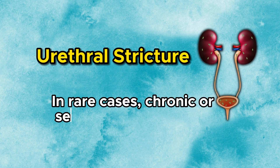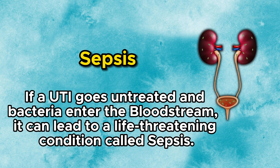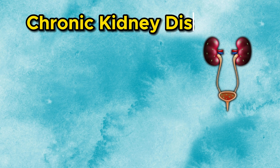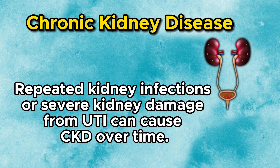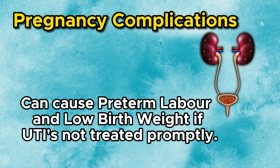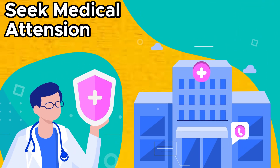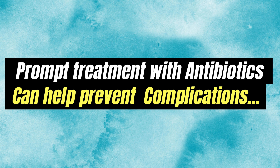Urethral stricture — in rare cases, chronic or severe UTIs can lead to scarring or narrowing of the urethra, making urination difficult. Sepsis — if a UTI goes untreated and bacteria enter the bloodstream, it can lead to a life-threatening condition called sepsis. Chronic kidney disease — repeated kidney infections or severe kidney damage from a UTI can contribute to the development of chronic kidney disease over time. Pregnancy complications — UTIs during pregnancy can increase the risk of complications such as preterm labor and low birth weight if not treated promptly. It's essential to seek medical attention if you suspect a UTI, especially if you experience symptoms such as pain, fever, or blood in the urine. Prompt treatment with antibiotics can help prevent these complications.